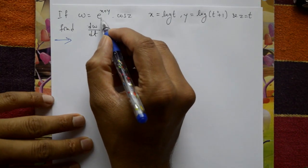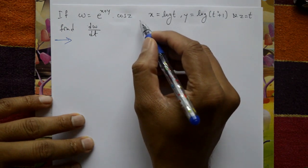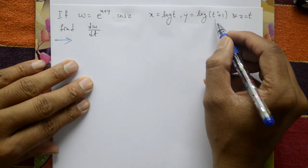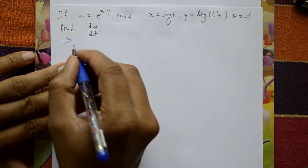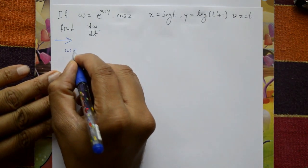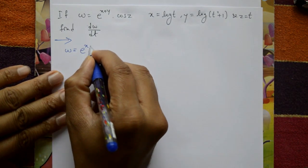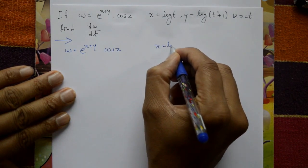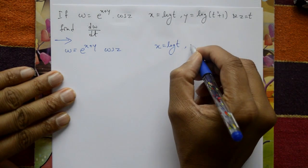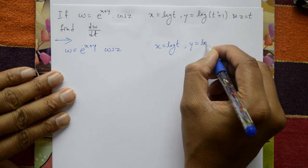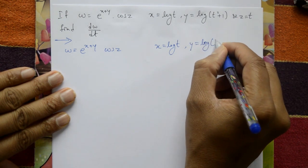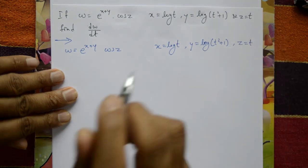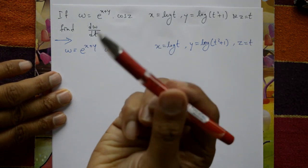If W equals e raised to x plus y into cos 2Z, where x equals log T, y equals log of T squared plus 1, and Z equals T, find dW by dT.